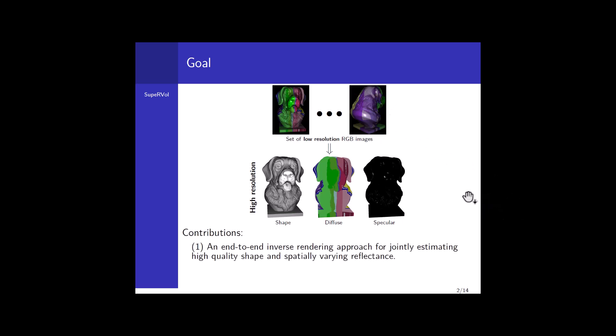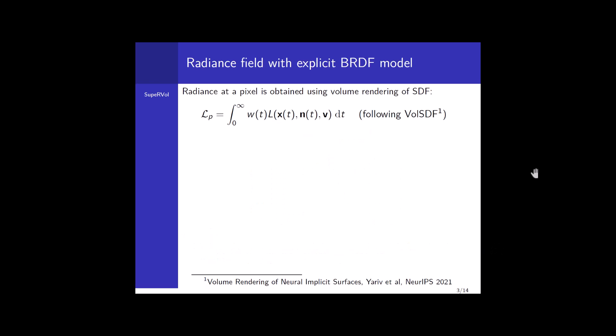Our contributions are as follows. First, we propose an end-to-end inverse rendering approach for jointly estimating high-quality shape and spatially varying reflectance. We perform all of this with a single optimization, initializing with a sphere in contrast to many other approaches which require multiple stages. Second, we propose the first approach which allows to obtain super-resolved shape and material estimation using an explicit parameterization of the camera degradation process.